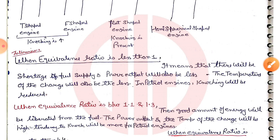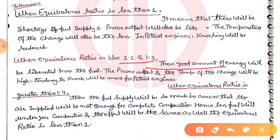When the equivalence ratio is between 1.1 and 1.3, a good amount of energy is liberated from the fuel. The power output and the temperature of the charges will be high. The tendency to knock will also be more for the petrol engine in this range.